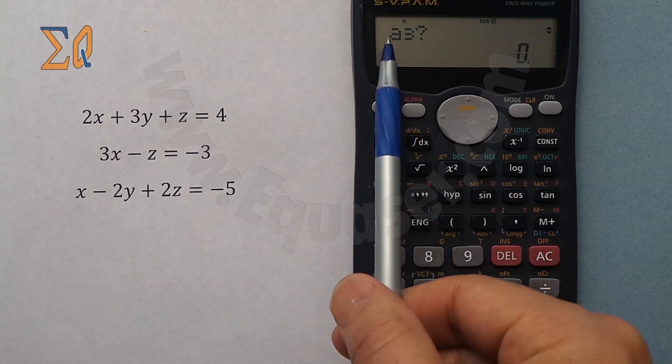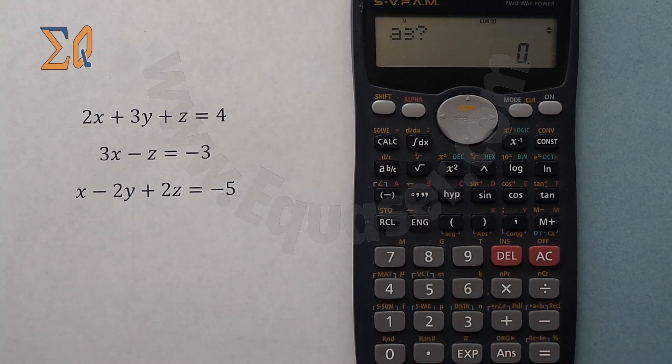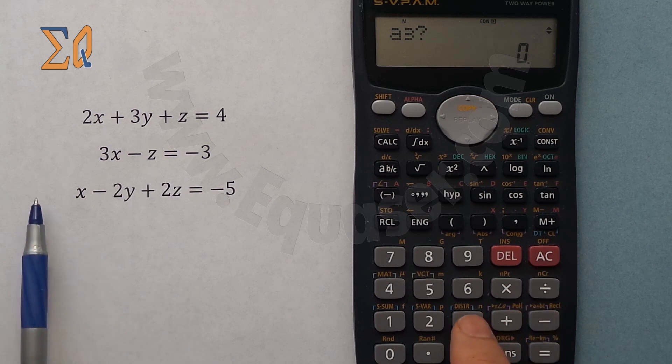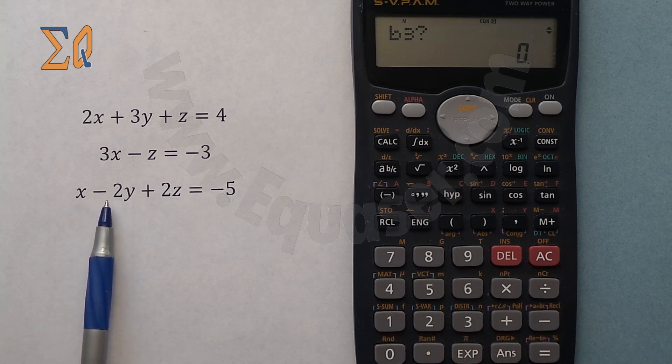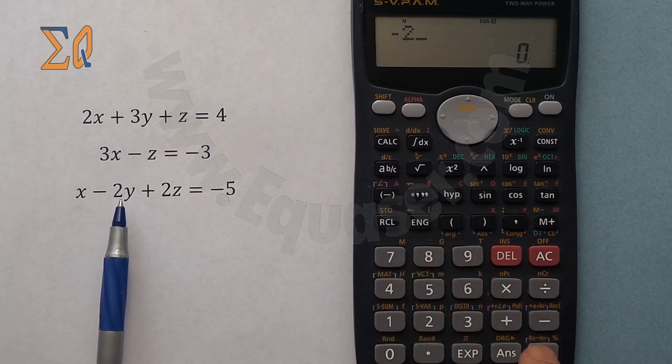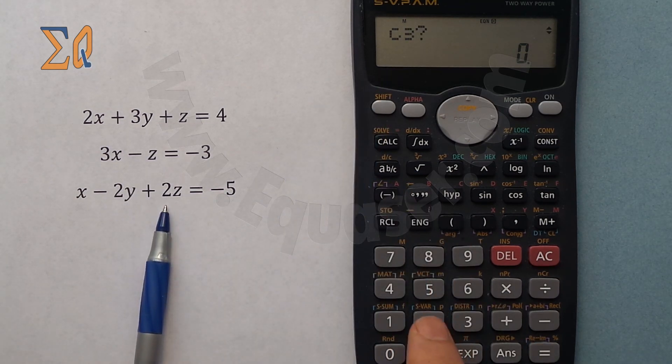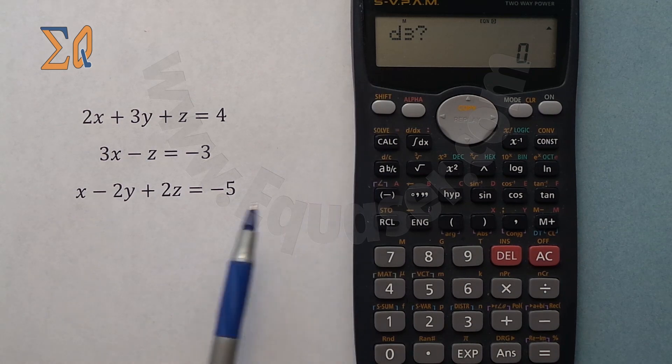Now it's asking a3 which is referring to equation 3 for a here. So for x that is 1, B is minus 2, and then C is 2, d is minus 5.